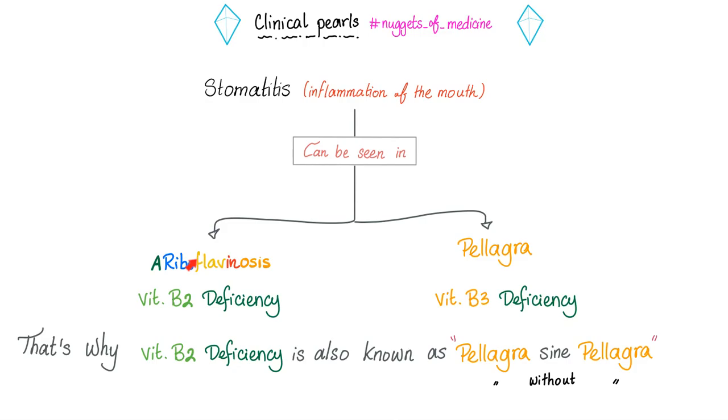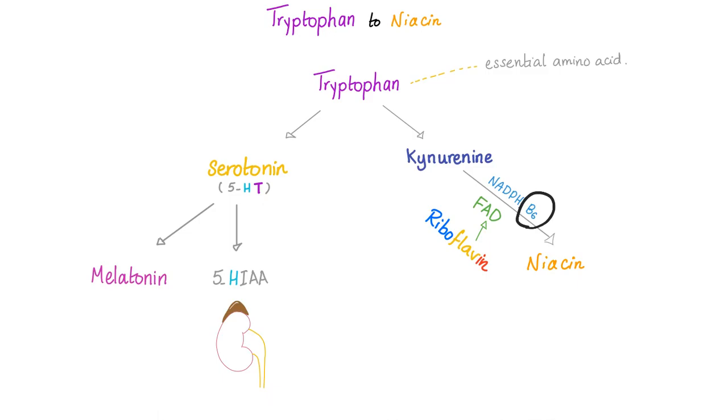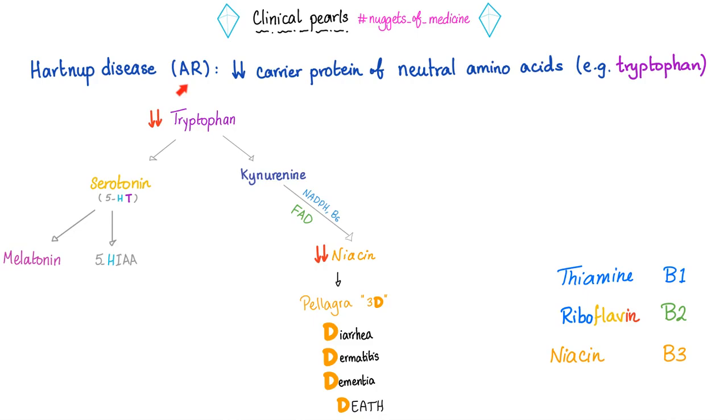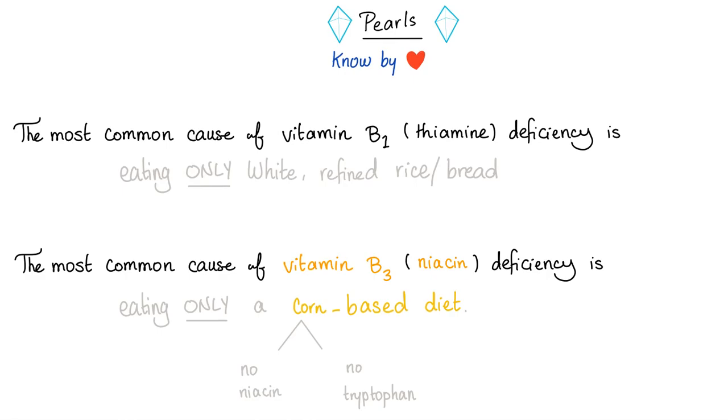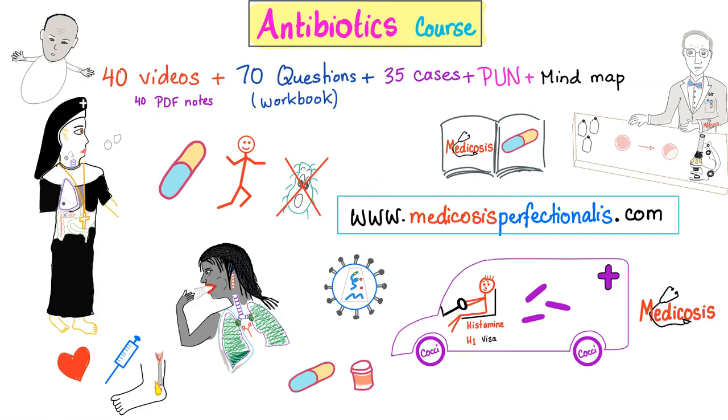Stomatitis can be seen with vitamin B2 deficiency or vitamin B3 deficiency. Now you understand why vitamin B3 deficiency affects the GI, the skin, and the brain. Don't forget that vitamin B6 is important, and NADPH is important if you want to have niacin. Hartnup disease is autosomal recessive and can lead to pellagra. Don't forget the most common cause of thiamine deficiency and the most common cause of niacin deficiency.